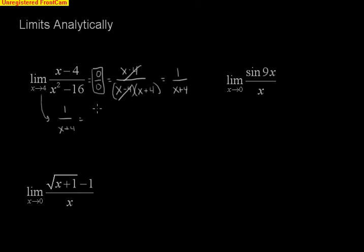1 over x plus 4 gives me 1 over 4 plus 4, and I'll have a limit of 1 eighth.